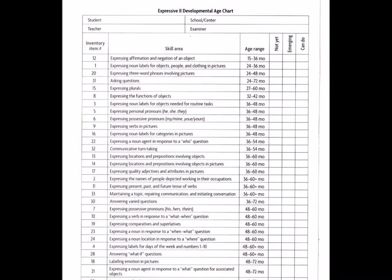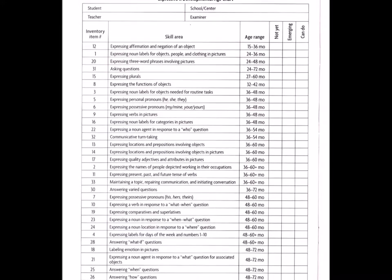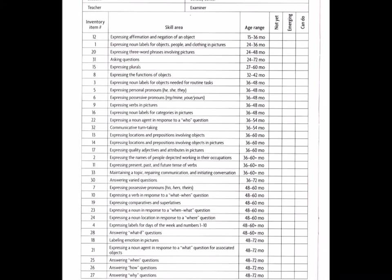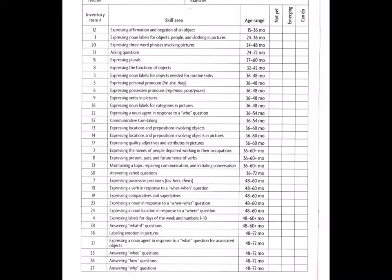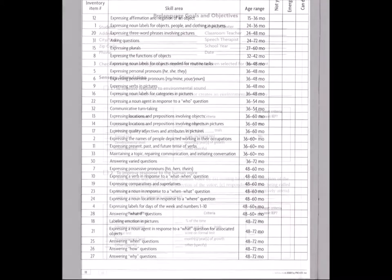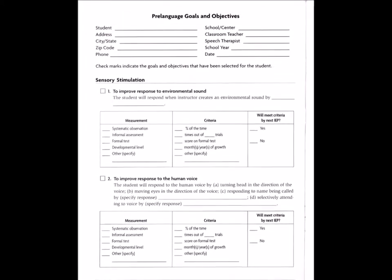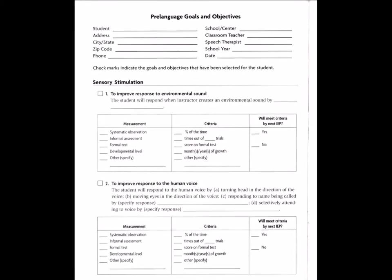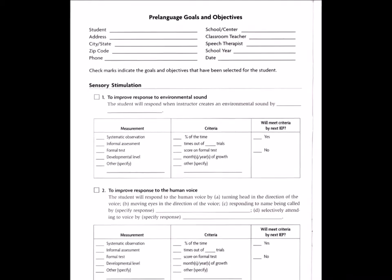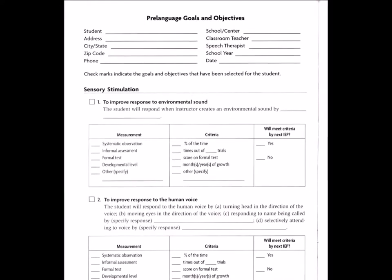Developmental age charts reorganize all skills according to the age of normal acquisition, providing the examiner an approximate age range at which a student is functioning and another referent for selecting IEP goals. After completing the inventory and profile, the examiner considers the student's emerging skills and recommends related goals and performance objectives to the IEP team, which may be used as listed or modified as needed.